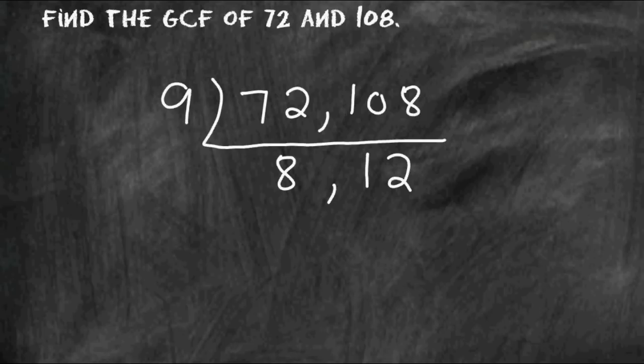So now we have the numbers 8 and 12. Now we must figure out what is a common factor of 8 and 12. We could start with the number 2 because 8 and 12 are both even. However, I can also see that 4 fits inside 8 and 12 equally. So I'm going to write the number 4 on the outside. And 4 fits into 8 twice, and 4 fits into 12 three times.